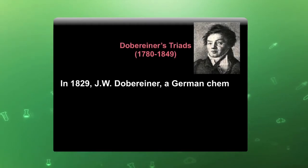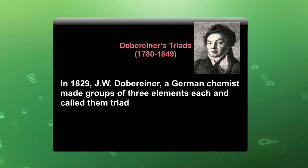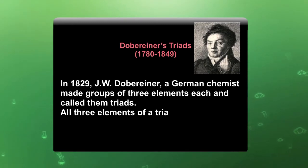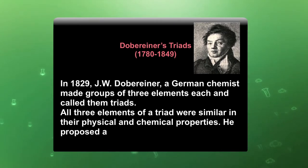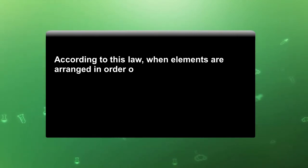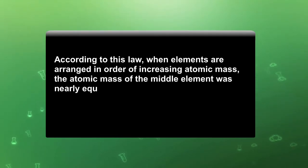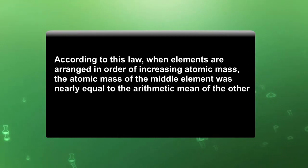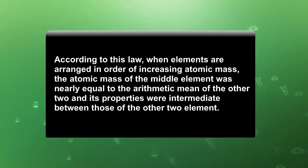Dobereiner's Triads: In 1829, J. W. Dobereiner, a German chemist, made groups of three elements and called them triads. All three elements in a triad were similar in their physical and chemical properties. He proposed a law known as Dobereiner's Law of Triads. According to this law, when elements are arranged in order of increasing atomic masses, the atomic mass of the middle element was nearly equal to the arithmetic mean of the other two, and its properties were intermediate between those of the other two elements.